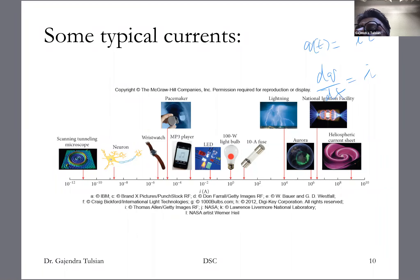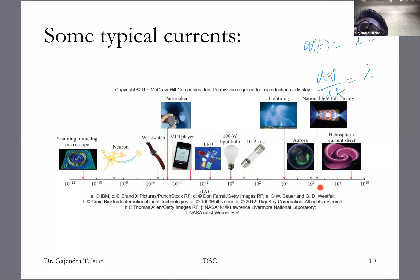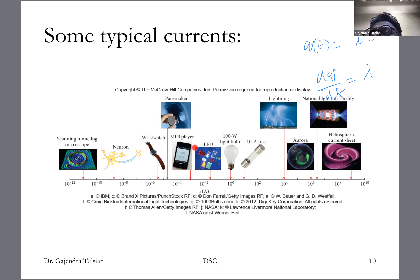An LED bulb practically uses no current at all. In lightning, you have a current of 10,000 amps; the Aurora is about a million amps. The National Ignition Facility, which aims to produce energy via fusion reaction, uses 10 million amps. The heliospheric current sheet — I urge you to look this up — is actually the largest structure in the solar system, a sheet of current carrying a billion amps. That's the range of currents we deal with.